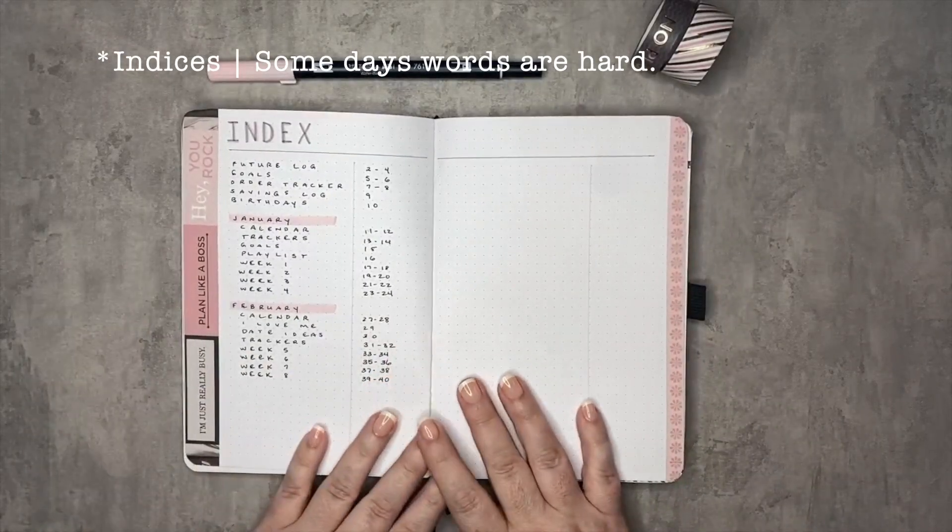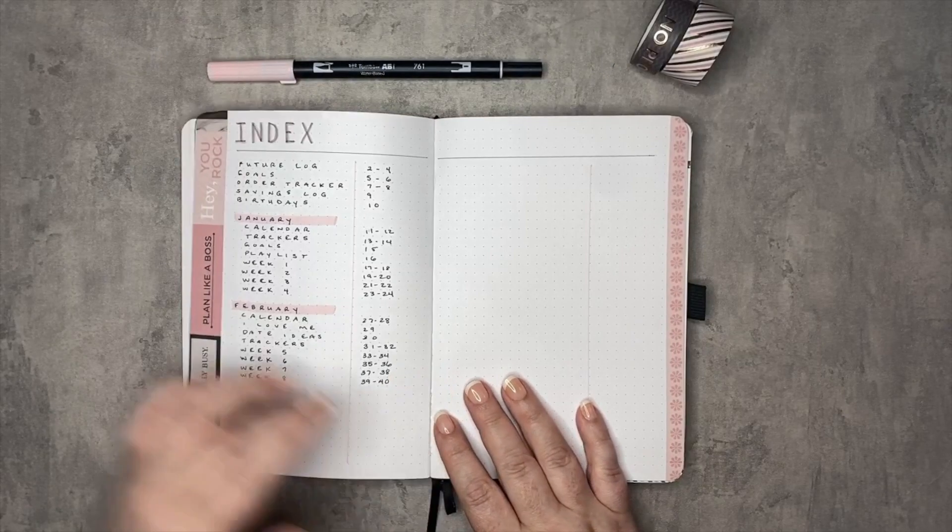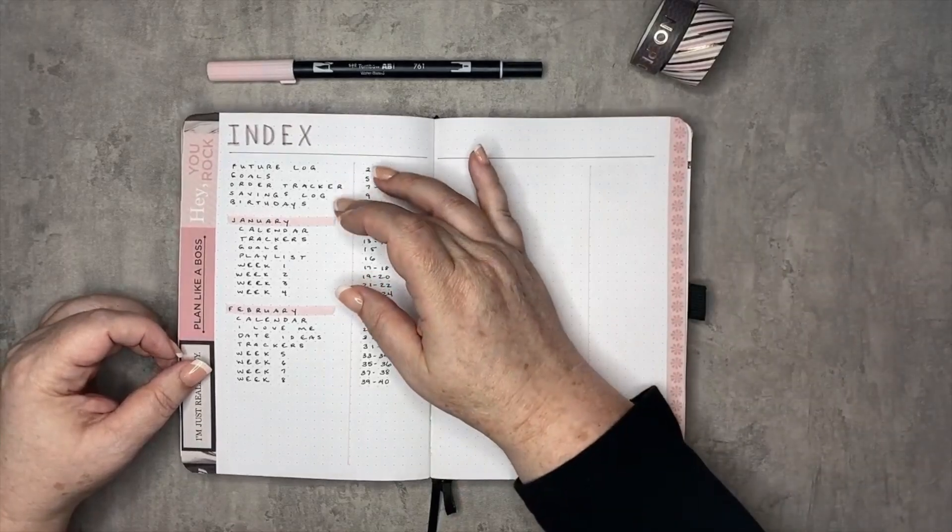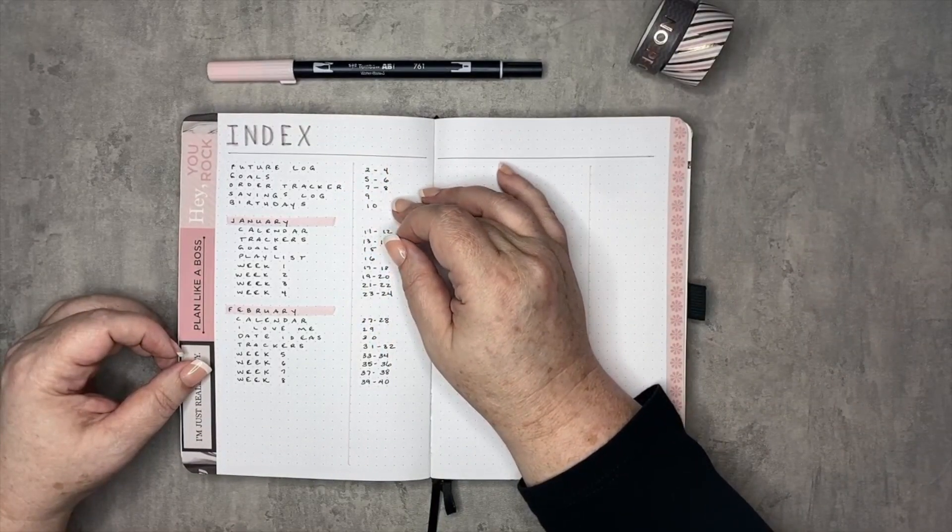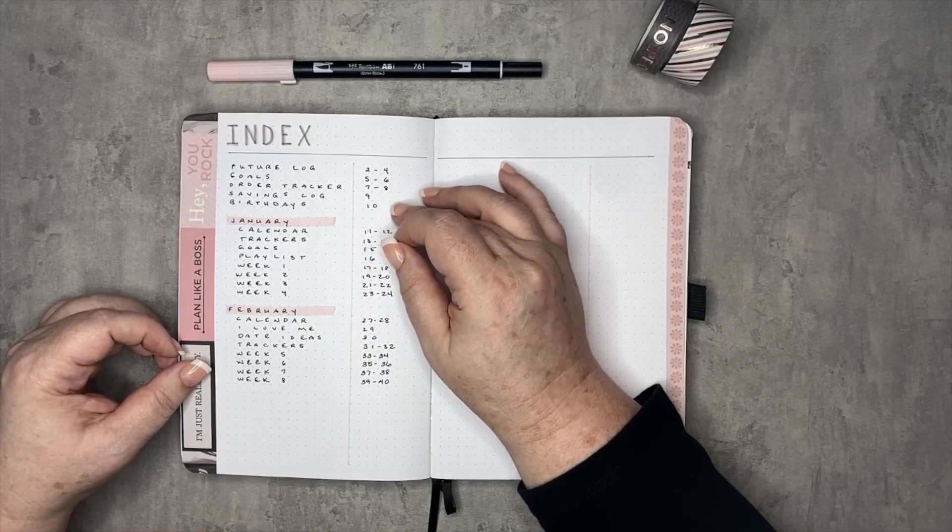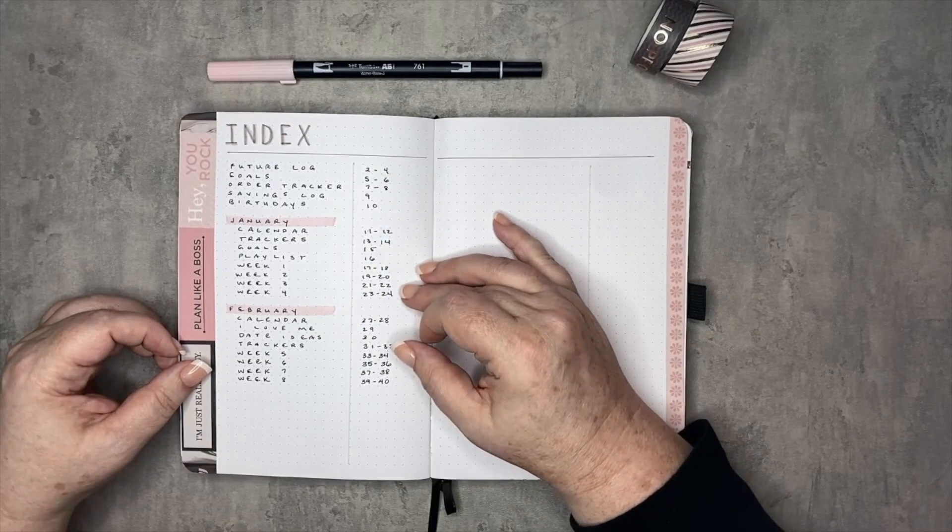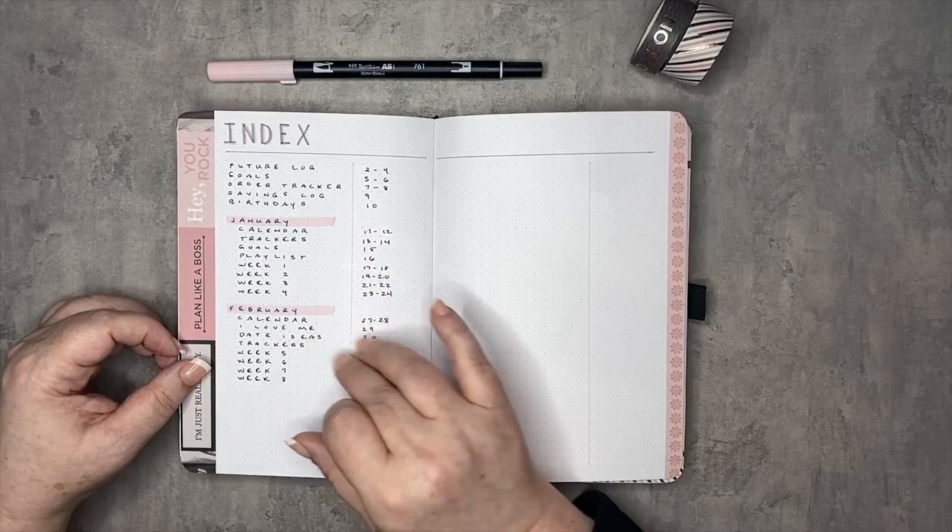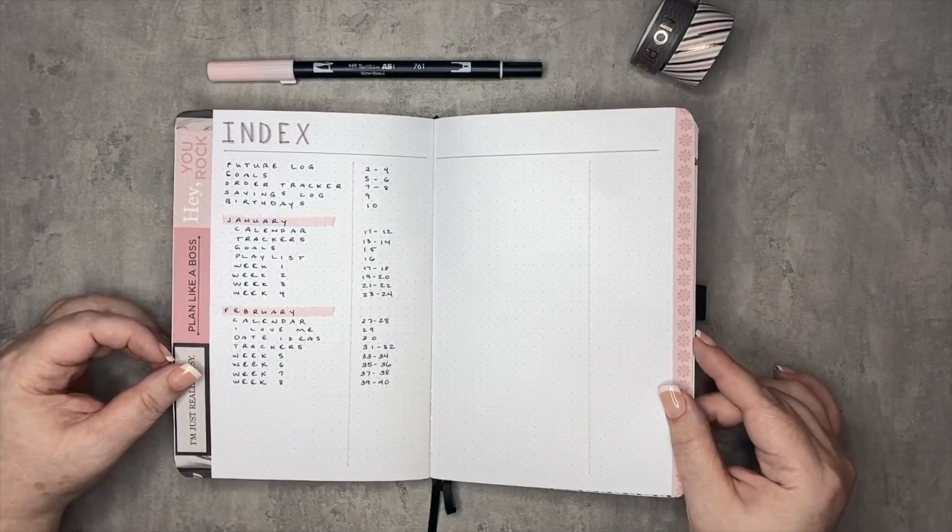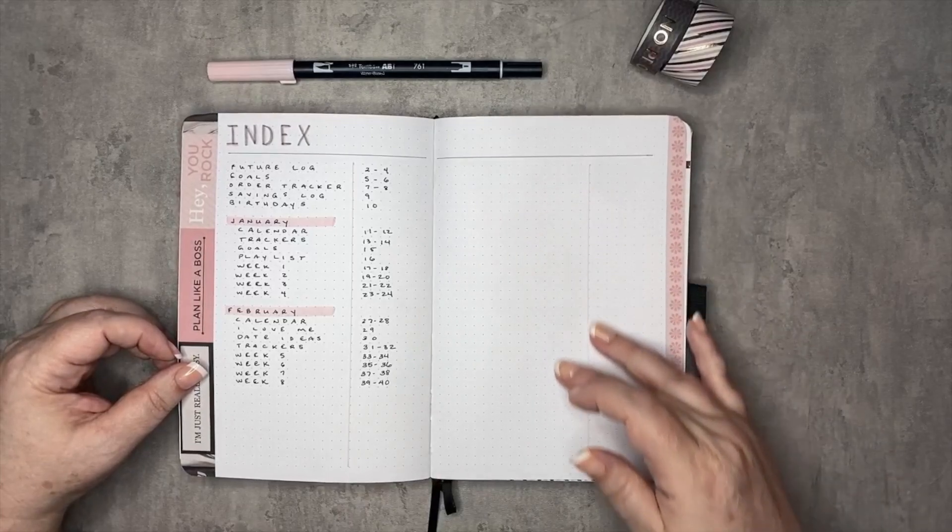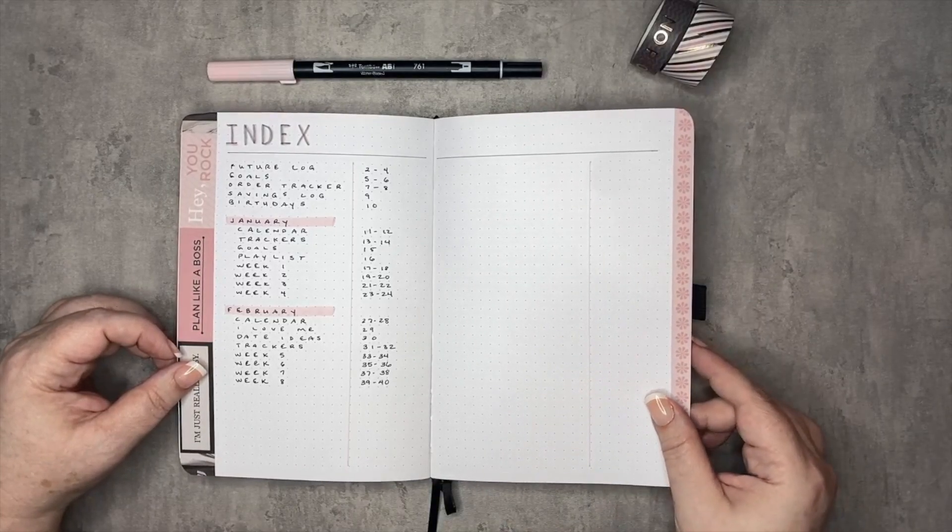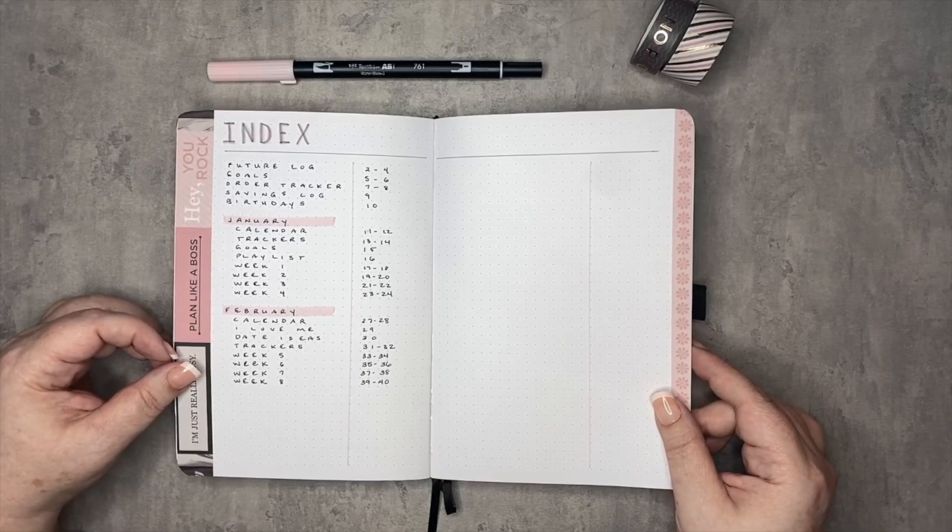So this is the first one that I have. It's a very standard index. I have some washi down either side and here at the top we have the future log or the things that you would put in the front of your journal, the various collections and stuff. And then jumping right into the monthlies which I have just highlighted lightly with pink to designate one from the other. And this is just a very standard index with enough space for you to roll to the next page. You probably need two spreads for this particular index.